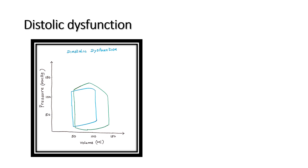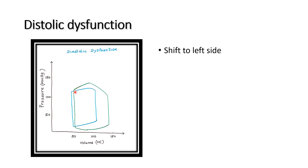During diastolic dysfunction, the green color curve is again the normal pressure-volume loop. The blue color curve represents diastolic dysfunction. In diastolic dysfunction, the ventricle cannot relax properly, so it cannot fill with blood up to the end-diastolic volume. As a result, the pressure-volume loop shifts to the left side.